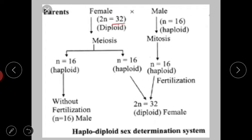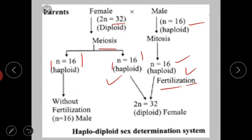In the haplodiploidy sex determination system, females have 2n equal to 32 chromosomes and males have n equal to 16. Females are diploid and males are haploid. The diploid female undergoes meiosis to form two sets each with n equal to 16. In the case of the male, only mitosis takes place, forming a haploid set of n equal to 16.